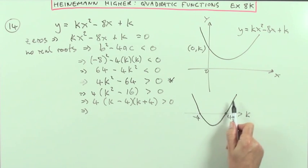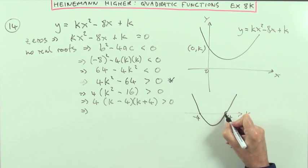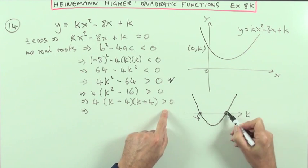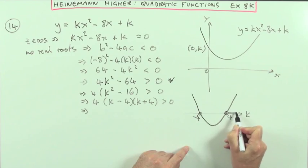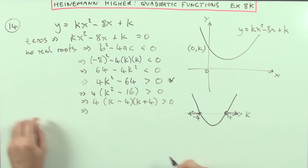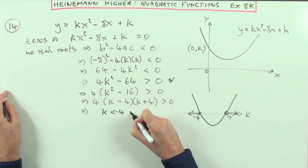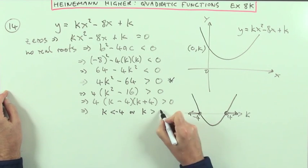So the pictures of the answers look like this. And I want to see, out of this set of answers, which parts are greater than zero. Well, certainly not anything on the axis. I'll put a hollow point there. So I won't be including them. And to be greater than zero means I'll be heading forward of 4 or back from negative 4. So the solution to this would be, that means that k is either less than negative 4 or k is greater than 4.